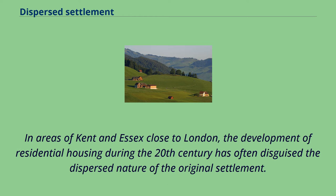It is sometimes possible to identify documentary references to farmsteads in the 18th or 19th centuries with these Domesday entries. In areas of Kent and Essex close to London, the development of residential housing during the 20th century has often disguised the dispersed nature of the original settlement.